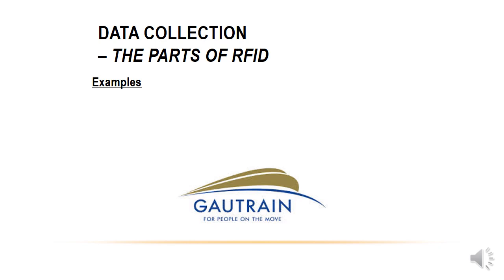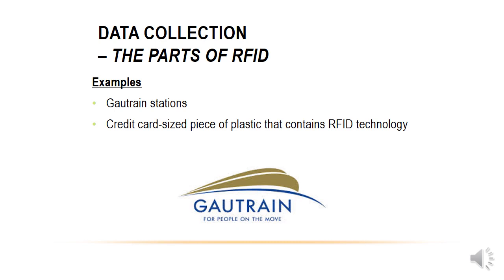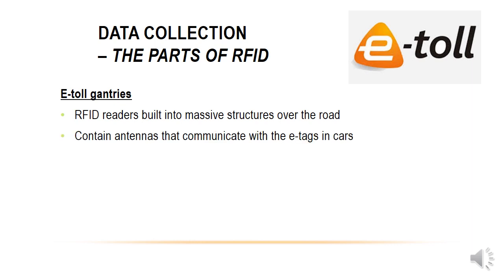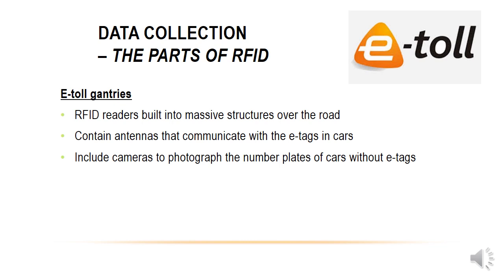Examples of RFID include the Gautrain, where your credit card ticket contains an RFID chip, and it's used for access control. E-toll gantries — those large bridge structures over roads — contain RFID antennas to communicate with e-tags in cars. They also include cameras, so cars without e-tags are photographed.